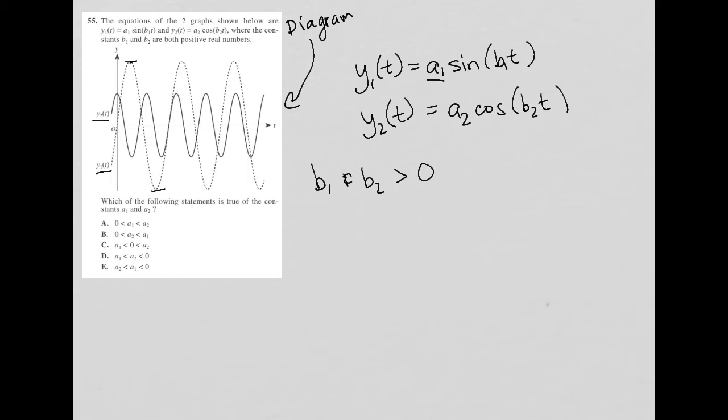What do a1 and a2 do to our graphs? I kind of alluded to it without even realizing that's what I was doing. The coefficient—and you may not remember this from trigonometry class—but the coefficient in front of the sine or the cosine represents the amplitude.